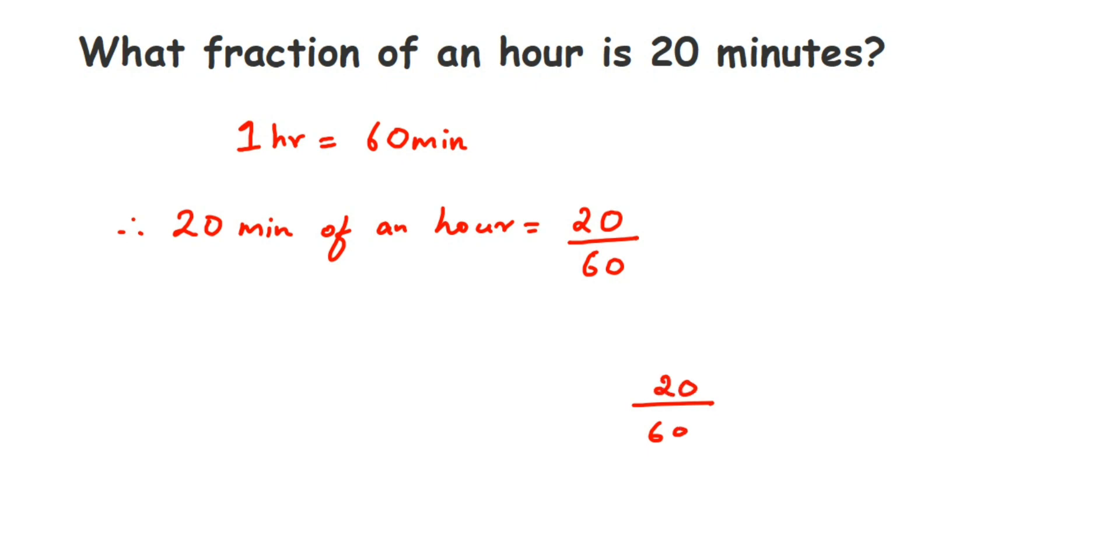You can cancel the zeros first, then cancel in the two table. Two ones, and then two threes are six. So the answer will be one by three.